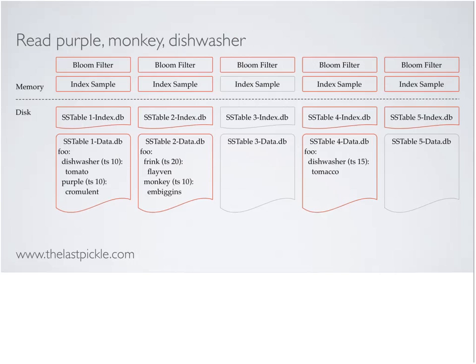Pictorially, things above the line are in memory, things below are on disk. For SSTables 1 and 2 the bloom filter says keep looking, we check index samples, then do random reads into the index and data components on disk. For SSTable 3, the bloom filter says stop looking — no chance of finding the row. SSTable 4 is a standard read. For SSTable 5, a degenerate case: the bloom filter says the row key may exist, we go to disk but can't find the row key in the index — this is what we call a false positive, which you'll see in some administration tools.